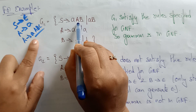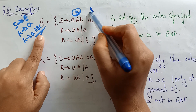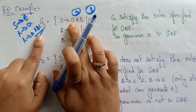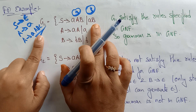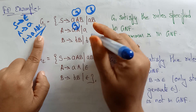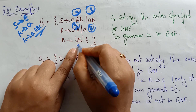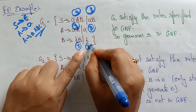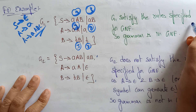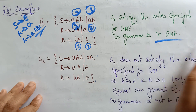Checking G1: S → AAB — a terminal followed by non-terminals, satisfying rule 3. S → AB — also rule 3. A → a — a single terminal, satisfying rule 2. A → BB — rule 3. B → b — rule 2. Since all productions satisfy the GNF rules, G1 satisfies the conditions specified by the Greibach Normal Form. So the grammar G1 is in GNF.